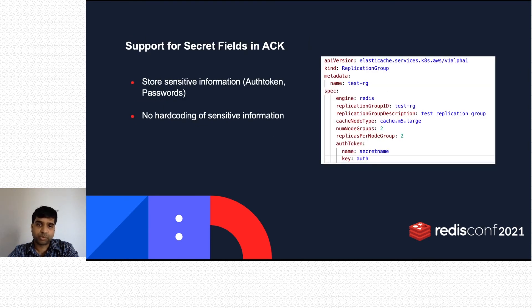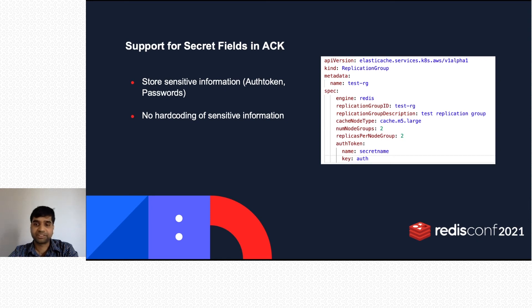We have added support for Kubernetes Secrets in ACK. You can specify confidential information like auth tokens and passwords in Kubernetes Secrets, and refer to them in the manifest while creating an ElastiCache cluster. This ensures that there is no hard-coded credential information in any YAMLs or JSON. In this example, for the auth token, we have referred to a secret called 'secret-name' in the default namespace, with the key of the secret called 'auth'.